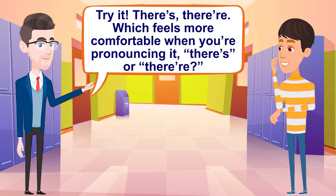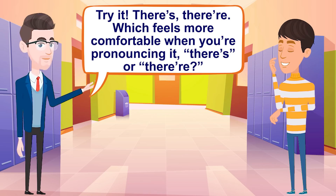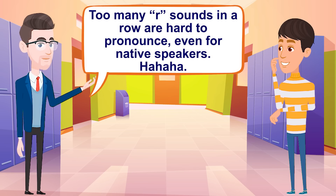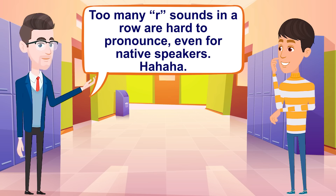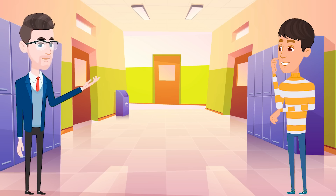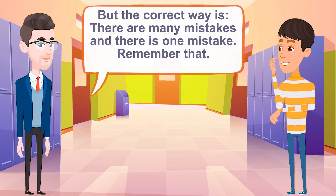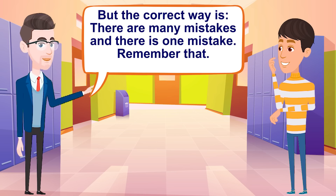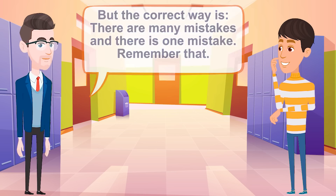Try it — 'there's,' 'there are' — which feels more comfortable when you're pronouncing it? 'There's' or 'there are'? Too many R sounds in a row are hard to pronounce, even for native speakers. But the correct way is 'there are many mistakes' and 'there is one mistake.' Remember that.